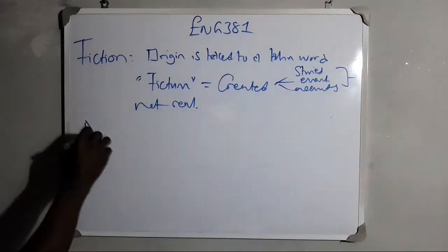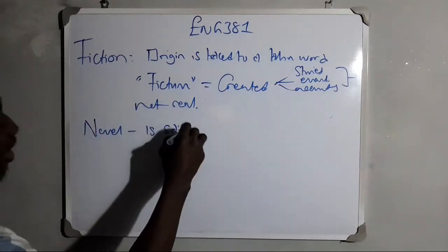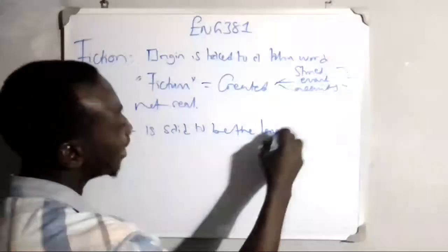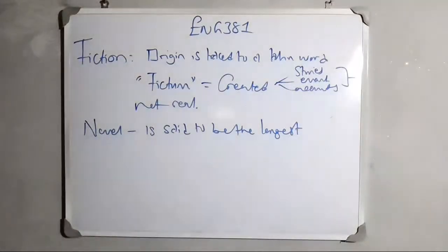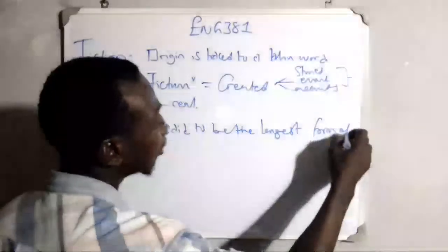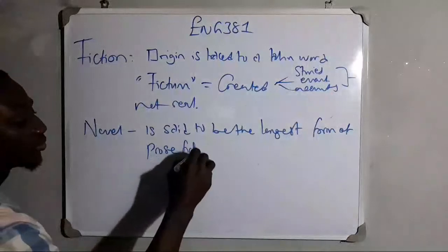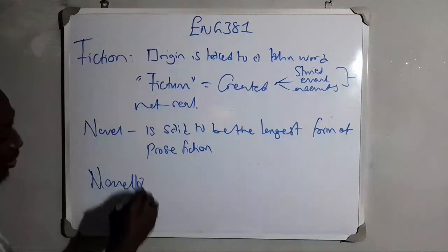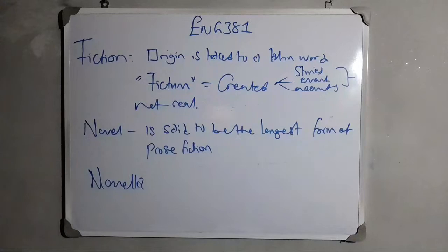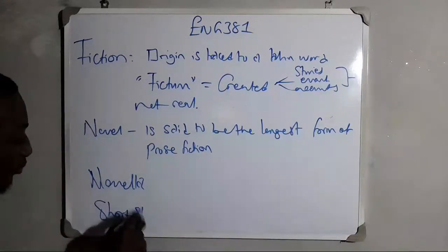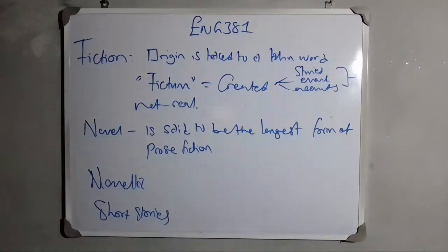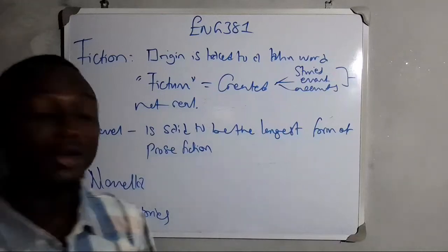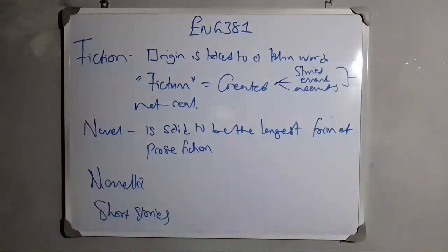Now the novel is said to be the longest form of prose fiction. Then we also have the novella, followed by short stories. So novel, novella, and short stories — all these are forms of prose fiction.